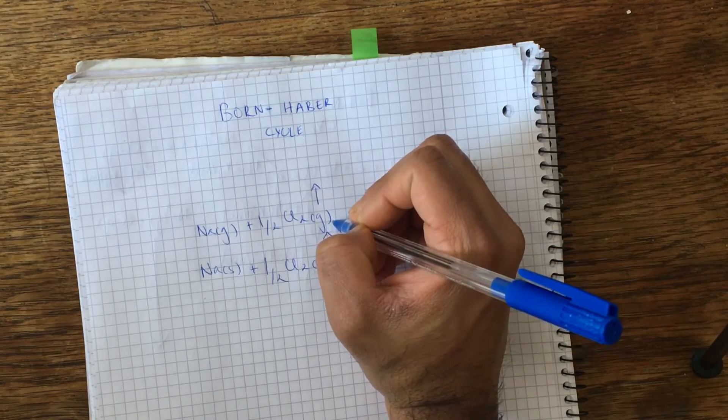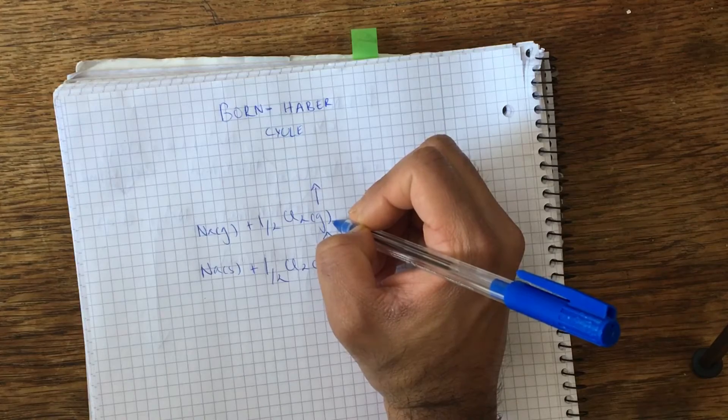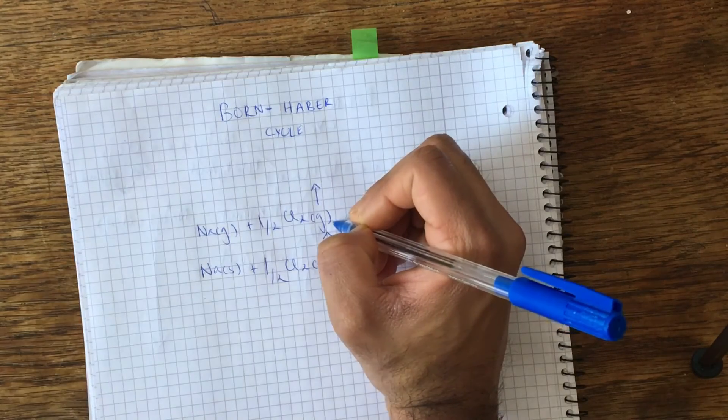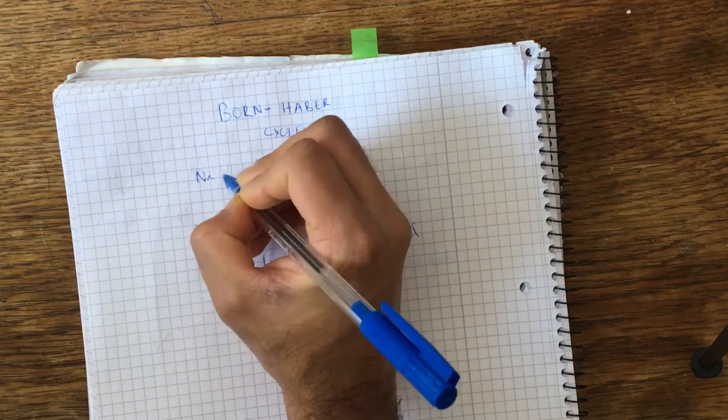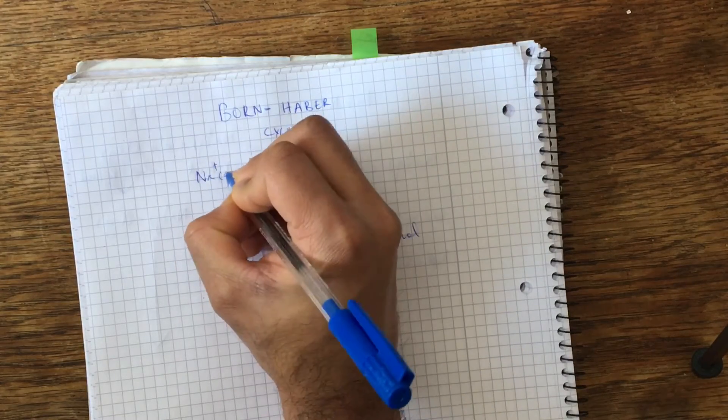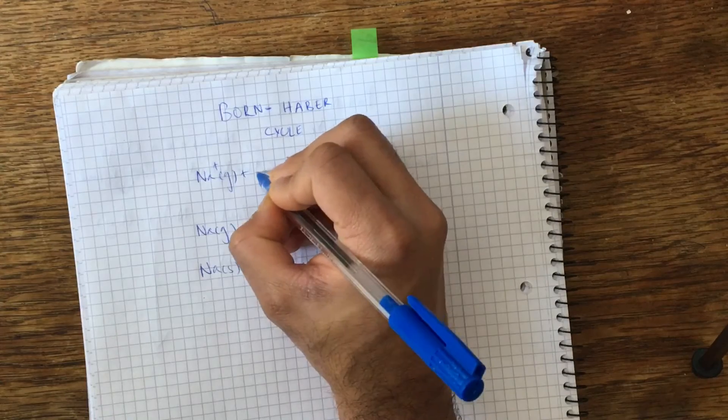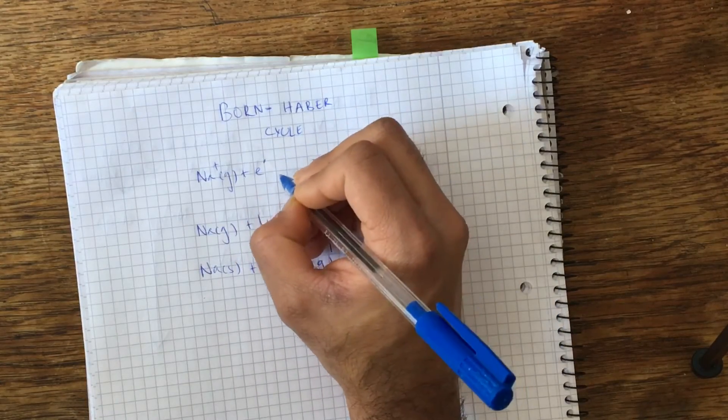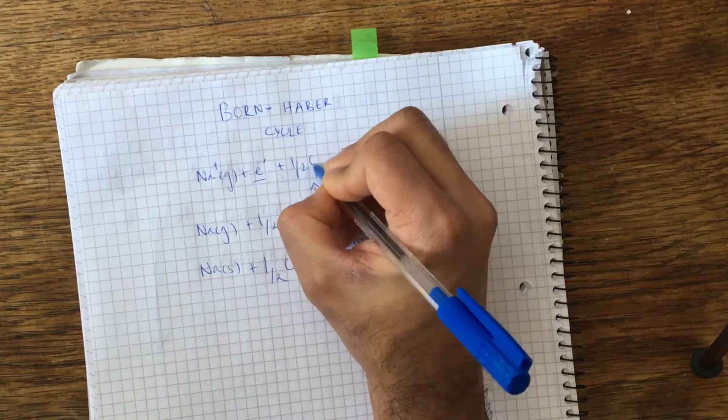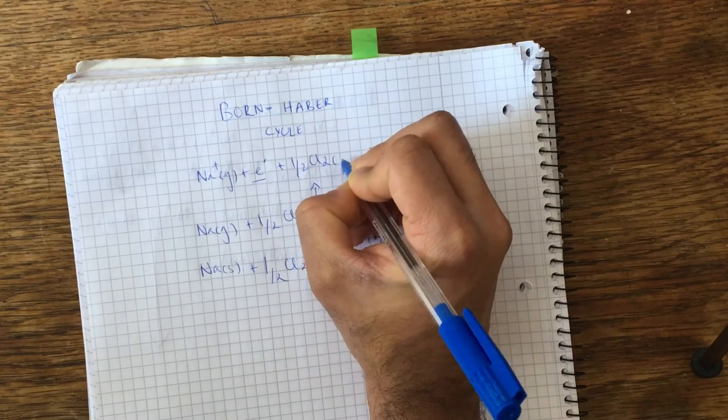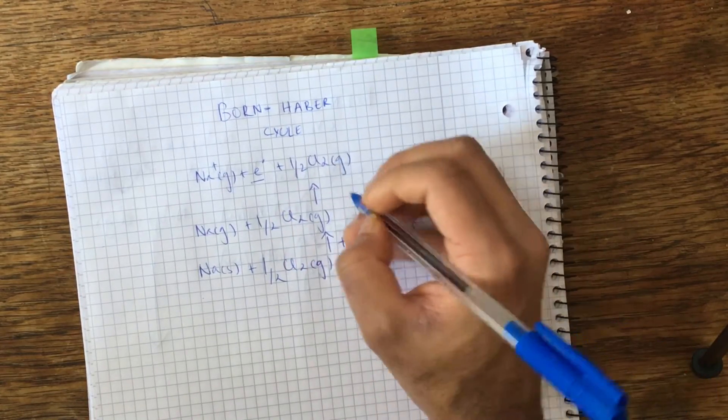For that we need the first ionization energy of sodium in order for it to release its valence electron. And then we'll have sodium in its ionic state, it releases the electron here, and we still have chlorine gas in its diatomic state.